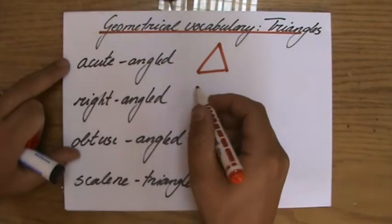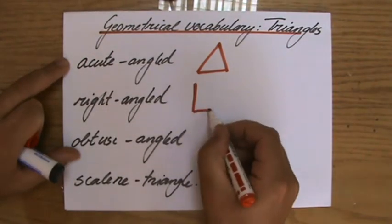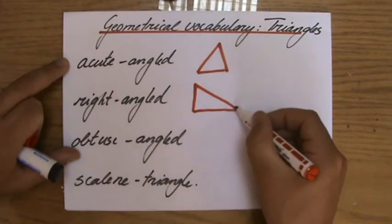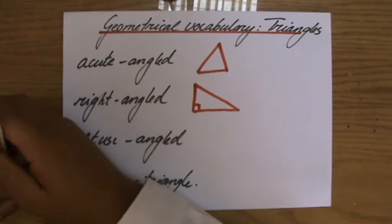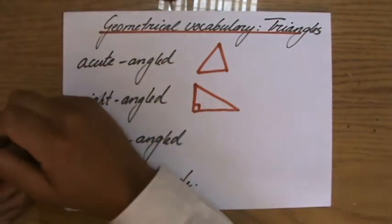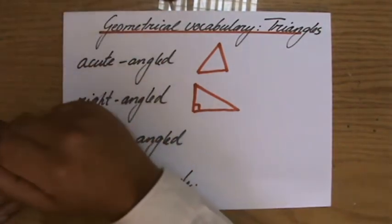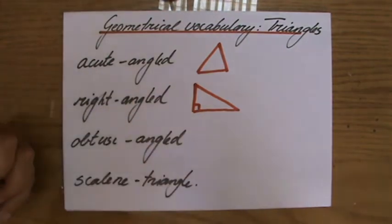A right angle triangle, I'm sure you're aware of it, is a triangle where one angle is a right angle, so a perpendicular angle 90 degrees. And please think about the question, is it possible to have a triangle with two angles of 90 degrees? You think about that.